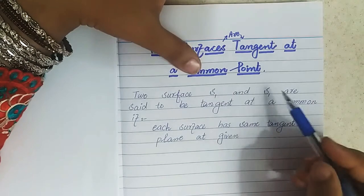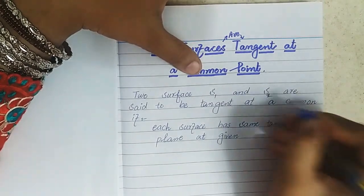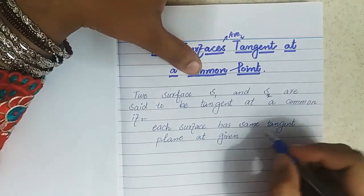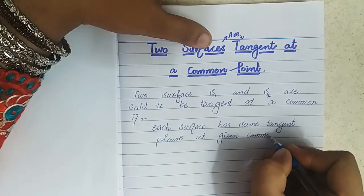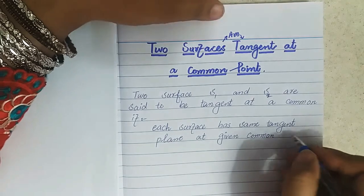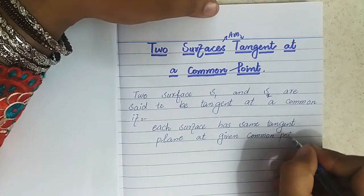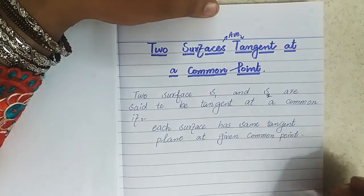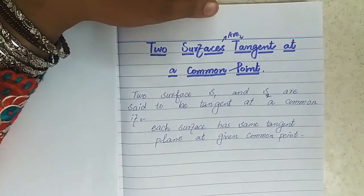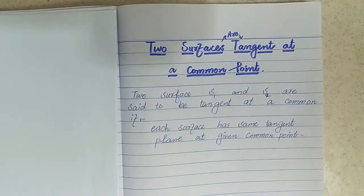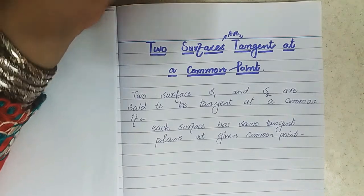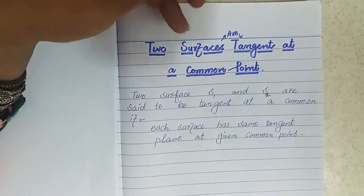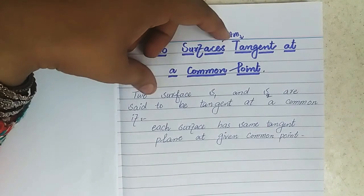If the equations of the tangent plane of surface S1 and S2 are the same for the given common point, then we can say that both surfaces are tangent at that point. So it is clear that if two surfaces are given, we have to find their equations of the tangent plane. If these equations are the same, then we can say that the two surfaces are tangent at that common point.